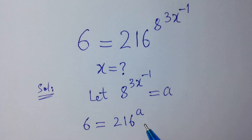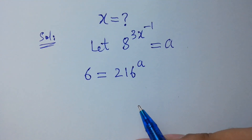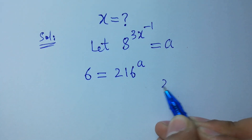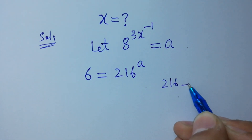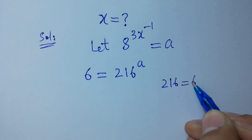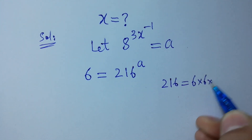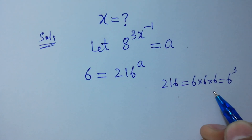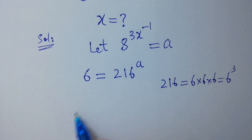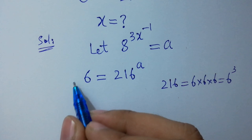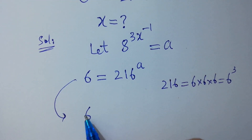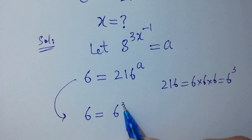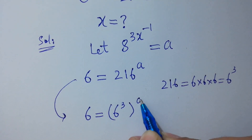In the next step, since 216 equals 6 times 6 times 6, which equals 6 cubed, so we have 6 equal to 6 cubed to the power a.